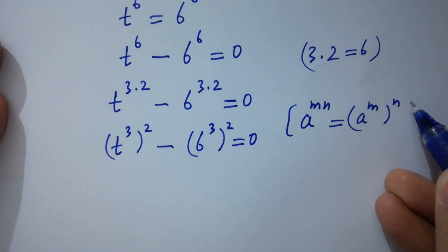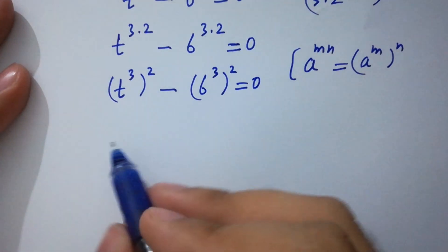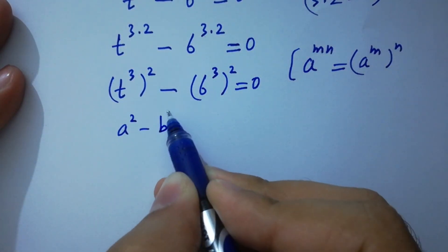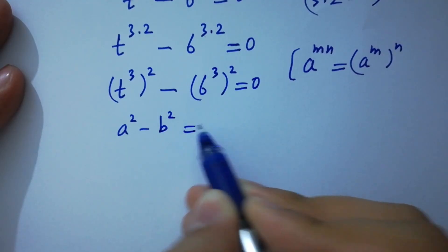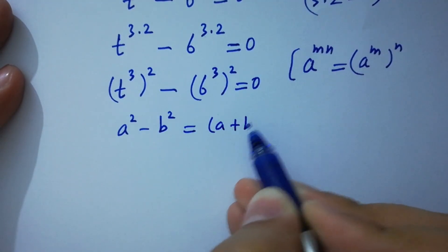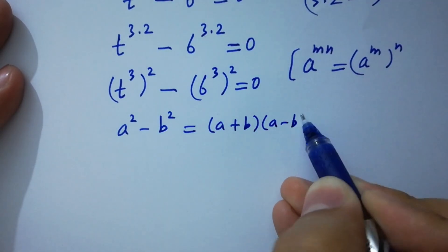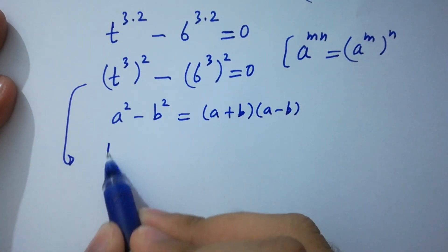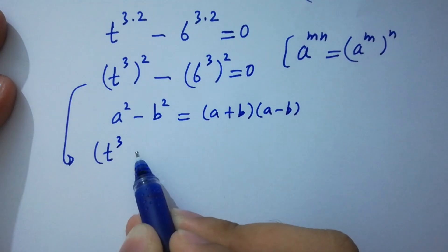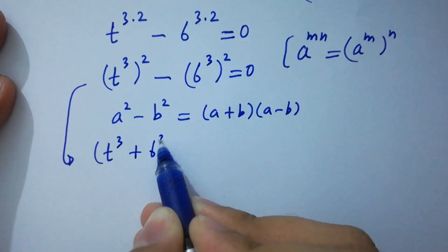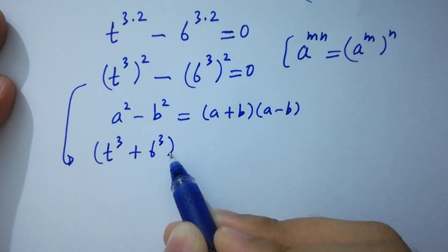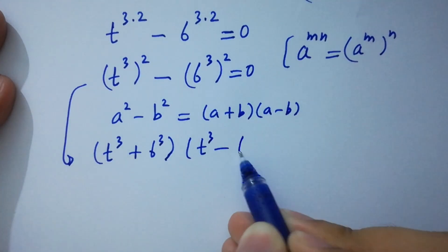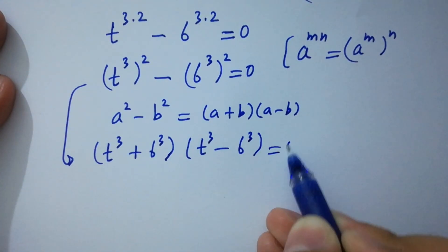Next, we apply the formula a² - b² = (a+b)(a-b). So we have (t^3 + 6^3)(t^3 - 6^3) = 0.